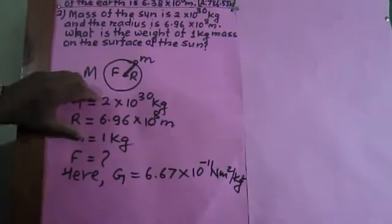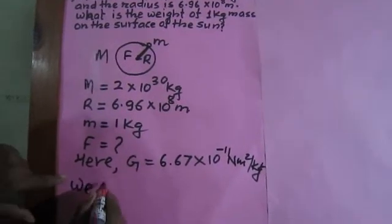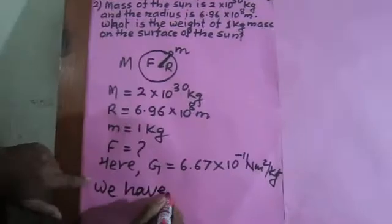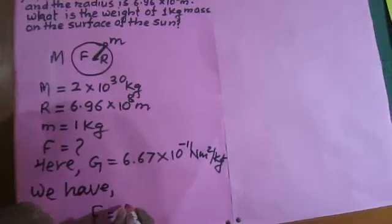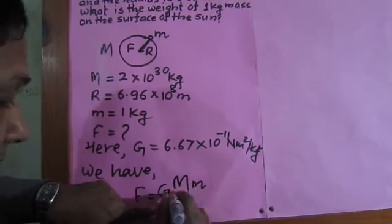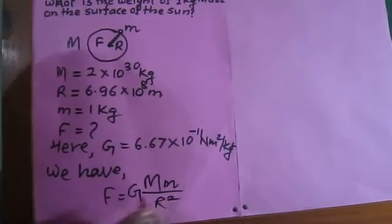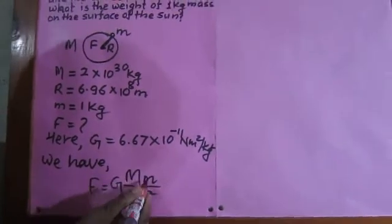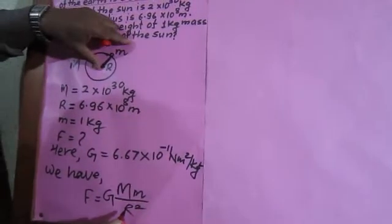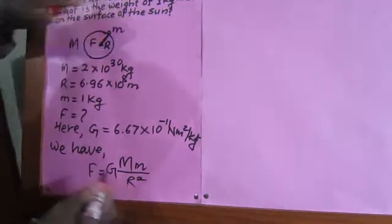These are given and we have to calculate F. We can write: F = G·M·m / R². In the previous first equation it was M₁ and M₂. Instead of M₁ and M₂, we have capital M and small m. And in the previous equation, the two bodies were separated by a distance, so D² was taken. Instead of D², we have R² here.